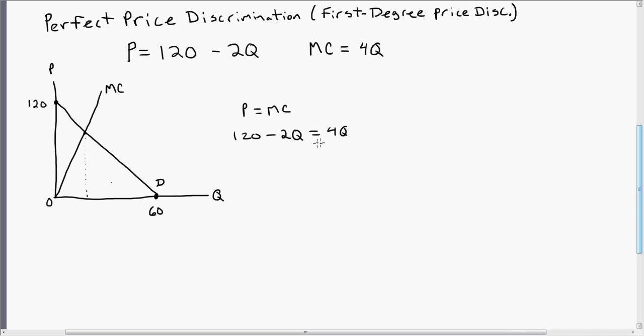So 120 minus 2Q equals 4Q. We're going to solve this for Q. So 6Q equals 120, or Q equals 20. So where price equals marginal cost occurs at 20 units of output.